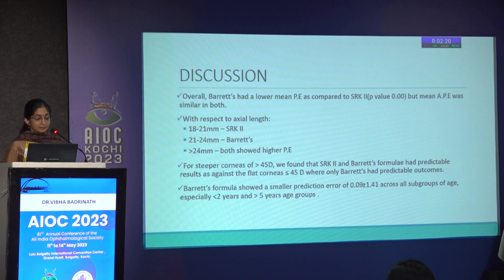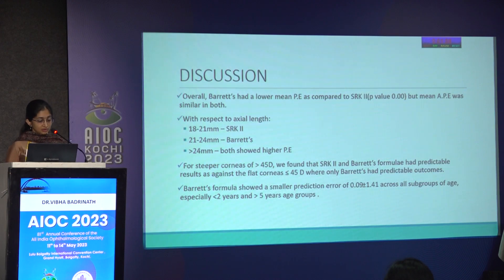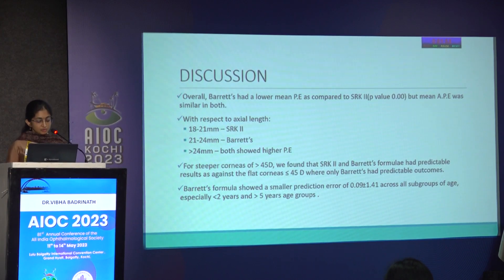Overall, Barrett's had a much lower predictive error compared to SRK2, and this was statistically significant, but the mean absolute predictive error was similar in both groups. With respect to axial length, SRK2 was better in the 18 to 21 mm group, Barrett's was better in the 21 to 24 mm group, and both had higher predictive error in the higher axial length group. For steeper corneas both were good, but in flatter corneas Barrett's performed better. Barrett's showed a smaller predictive error across all age groups, especially in the under-two-years group.